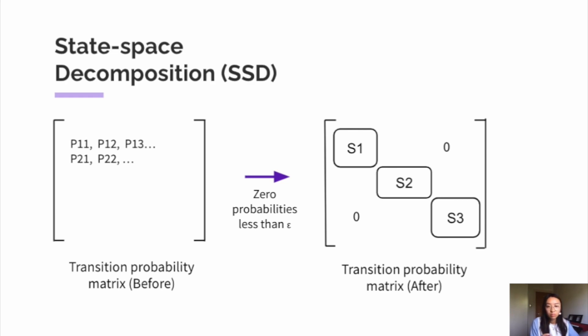And this matrix models the dynamics of our environment and contains the probabilities of transitioning from one state to another. And when this matrix is sparse, we can set some of these transition probabilities to zero if it's less than a certain threshold epsilon.